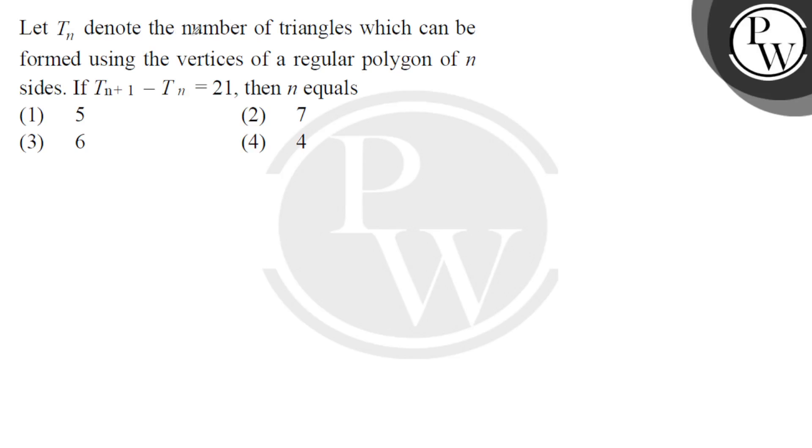Hello boys, here we have a question that T_n denotes the number of triangles which can be formed using the vertices of a regular polygon of n sides and T_(n+1) - T_n = 21, then n equals?